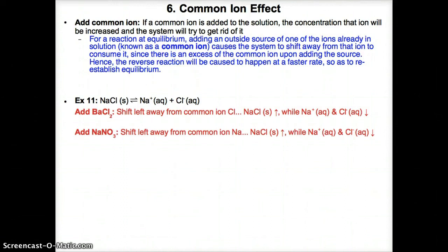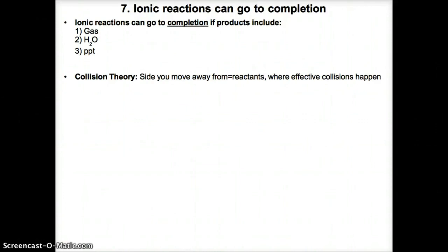Ionic reactions specifically can go to completion if the products include either a gas, water, or a precipitate. Regarding collision theory, the side you move away from acts as the reactants, where effective collisions happen as those species are consumed to produce the products on the side you shift towards.